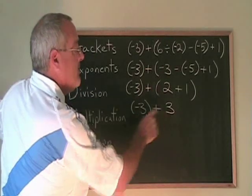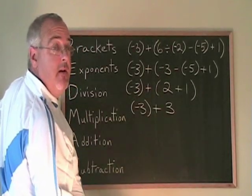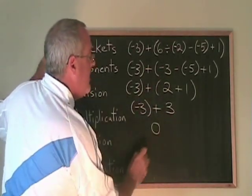And we have negative 3 plus 3. Again, applying the laws of integers, negative 3 plus 3 is equal to 0. That's our answer.